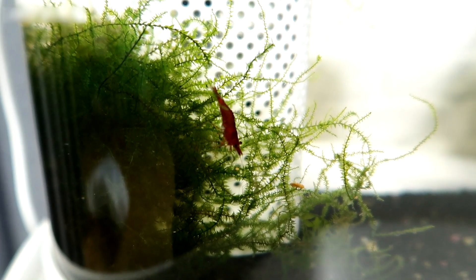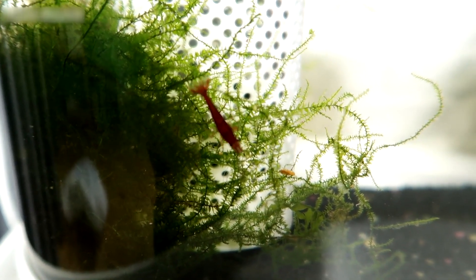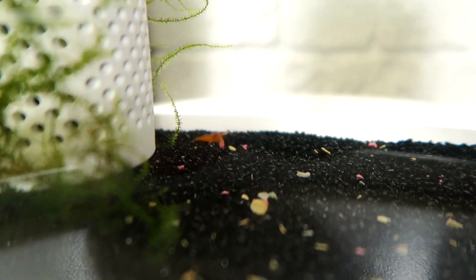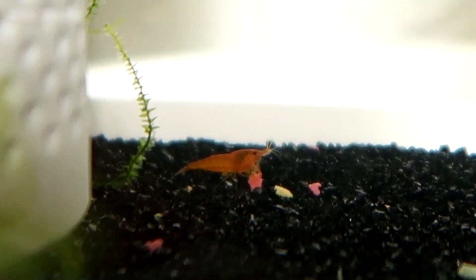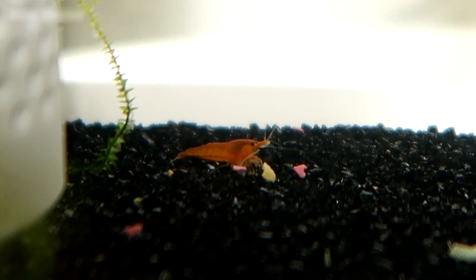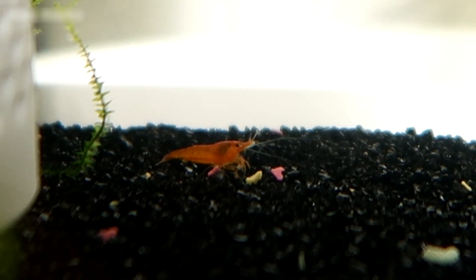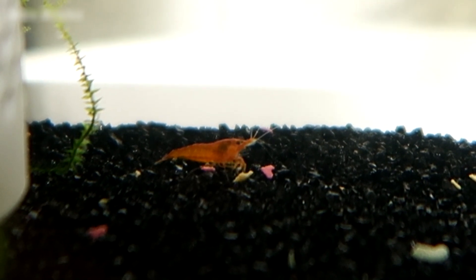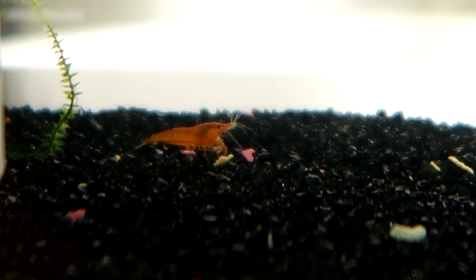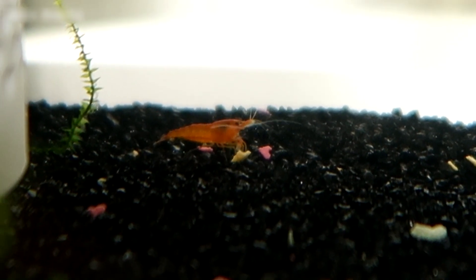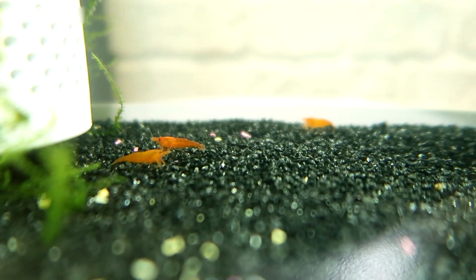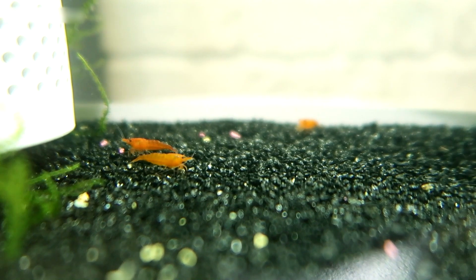Now, observe the shrimp. Especially the daring red one. One of them is bolder than the rest. It's the first to grab a bite once the food is served. You'll notice their coordinated dance to collect any stray morsels, keeping the tank water clean.